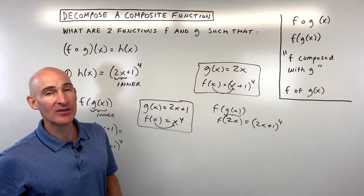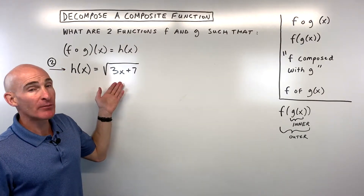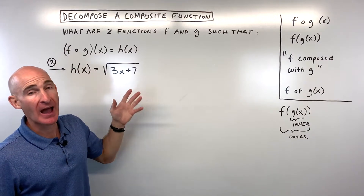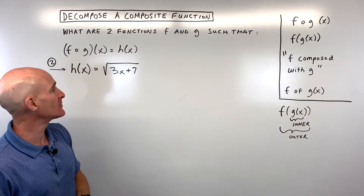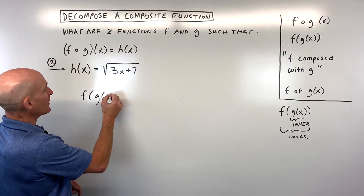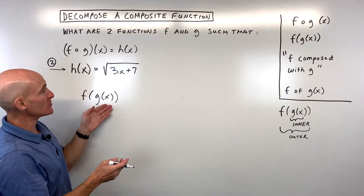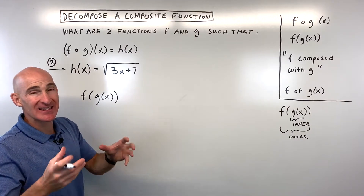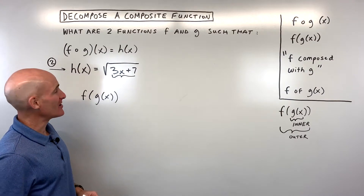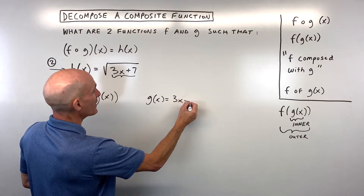There's more than one possibility, but think of inner and outer. For example number 2: h of x is equal to the square root of the quantity 3x plus 7. Again, we think about the inner and outer function. The inner function is g of x — what's on the inside. In this case, the inside is 3x plus 7, so g of x equals 3x plus 7.